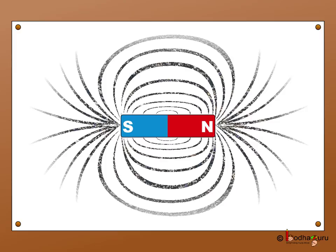These lines are actually representing magnetic field lines. The region surrounding a magnet in which the force of magnet can be detected is said to have a magnetic field.